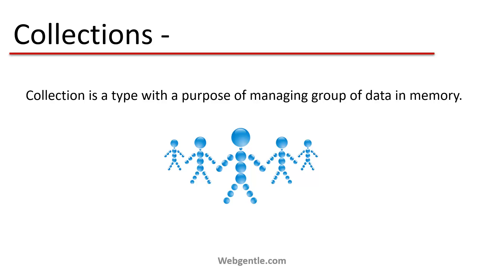All the data available in memory is referred to by collections. What is the meaning of having data in memory? Suppose you have data in a physical file or in your database, but if data is available inside your program — in the memory of the program — then that is called in-memory data.